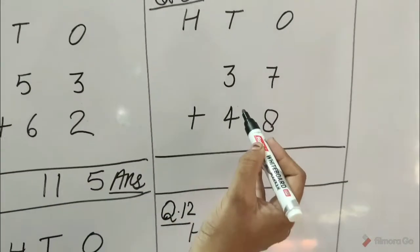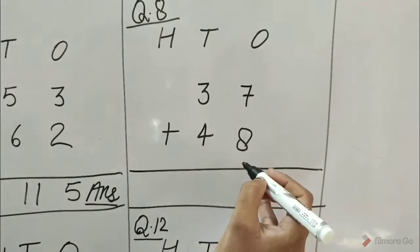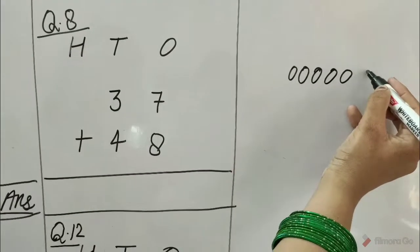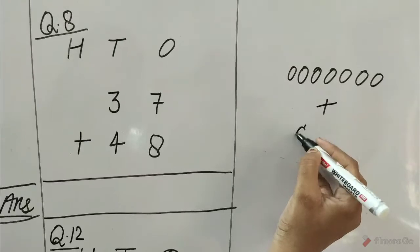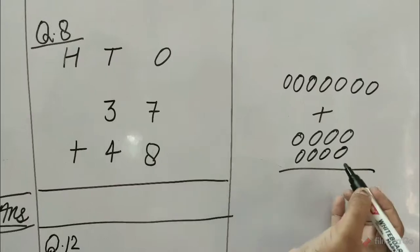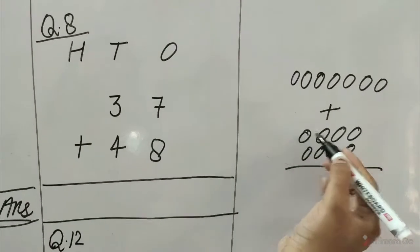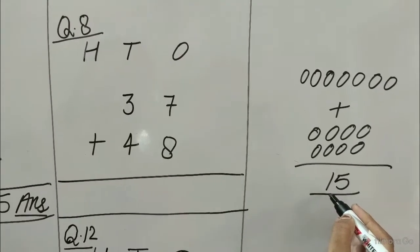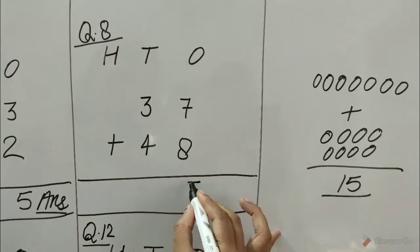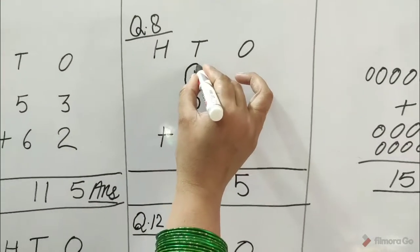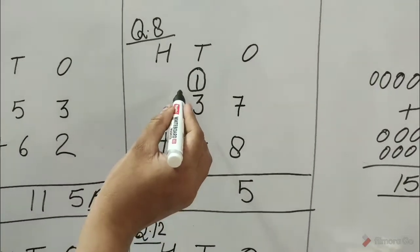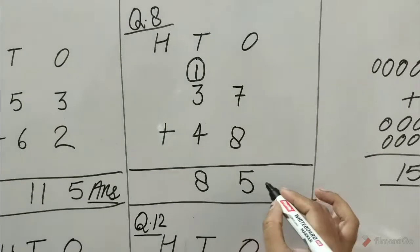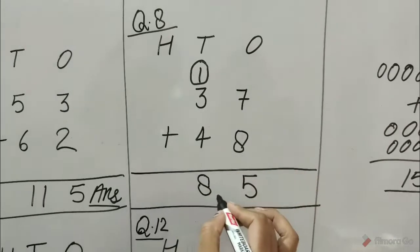Question number 8: 37 plus 48. Let's add ones first. Here we need rough work. Draw 7 circles for 7 ones plus 8 circles for 8 ones. Count all together: 1, 2, 3, 4, 5, 6, 7, 8, 9, 10, 11, 12, 13, 14, 15. Total number of circles are 15. 15 means 1 ten and 5 ones. Write 5 under the ones and 1 ten goes to carry at tens. Let's add tens: 1 ten plus 3 tens is equal to 4 tens, plus 4 tens is equal to 8 tens. 37 plus 48 is equal to 85.